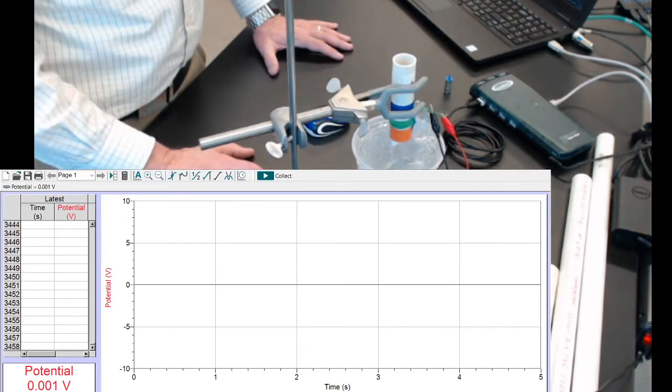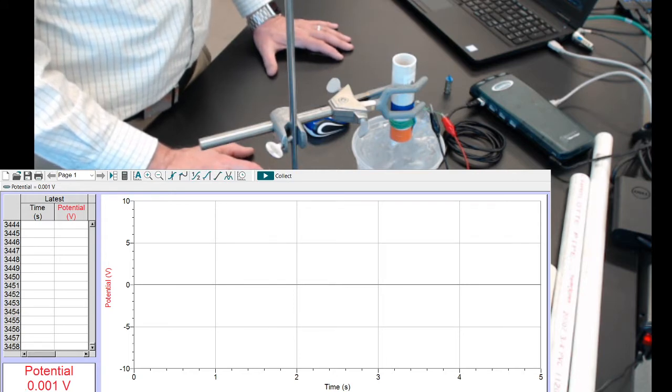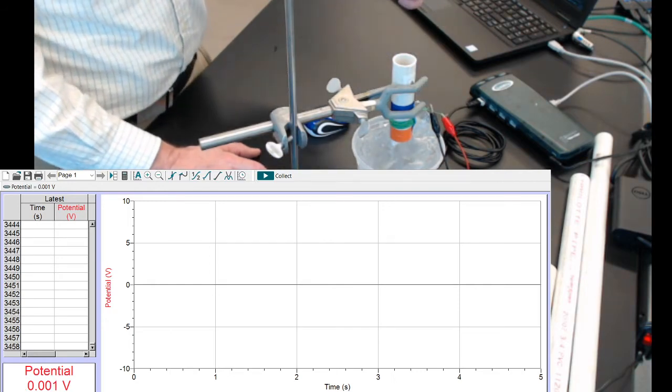Okay, now we're able to do the first experiment, which will test the sign dependence on Faraday's law. This is the minus sign, but we're going to test it by flipping the magnet over.